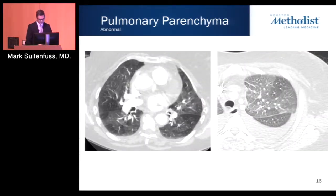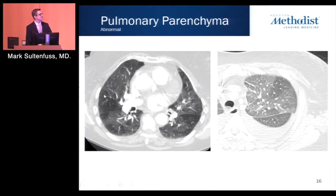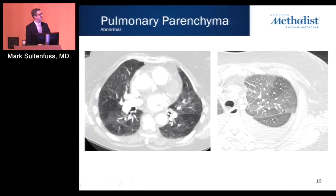Parenchymal changes in CTEPH include a mosaic pattern of attenuation, seen in up to 77% of CTEPH patients. On imaging, geographic areas of dark and light within the lung parenchyma are visible. In chronic pulmonary embolism, the dark areas are hypoperfused and the lighter areas are normal — contrasted with volume overload, where the lighter areas are abnormal and dark areas are normal. In COPD, the darker areas may represent air trapping.